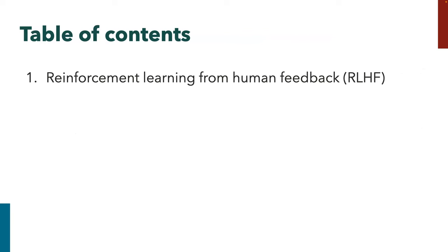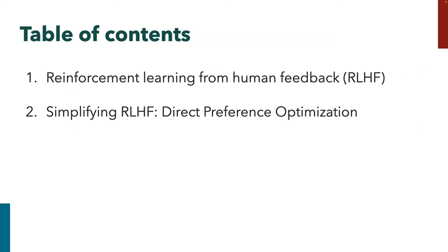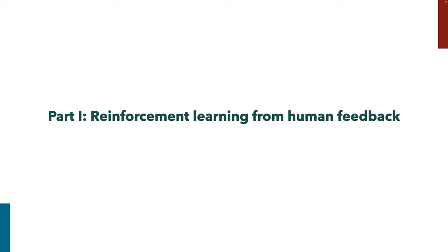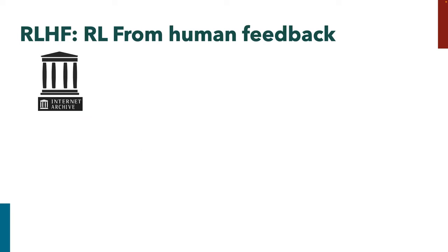I'm going to stick to the bandit formulation because that's what most of the work so far has used and it's the basis of the algorithms we're going to talk about. What we're going to cover today is basically three main sections: a primer on RLHF for people not familiar with it — this is the algorithm as far as we know it was used to give us ChatGPT; a newer algorithm that simplifies the complexity called Direct Preference Optimization; and then some applications.